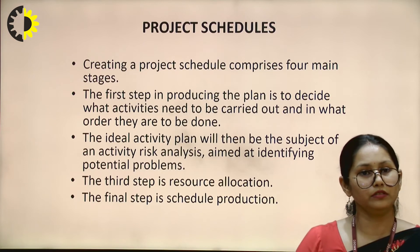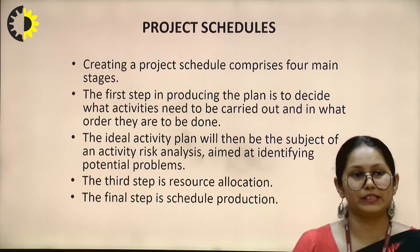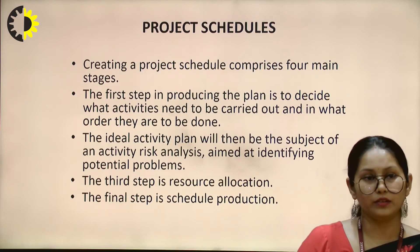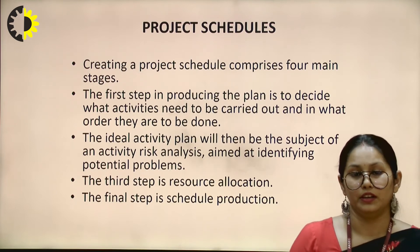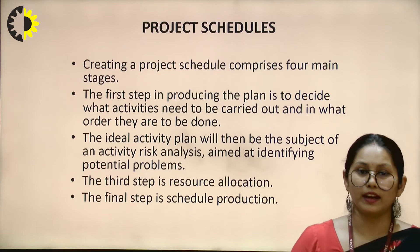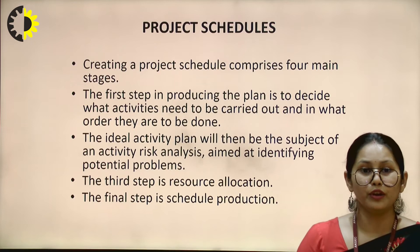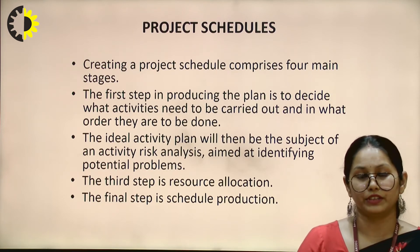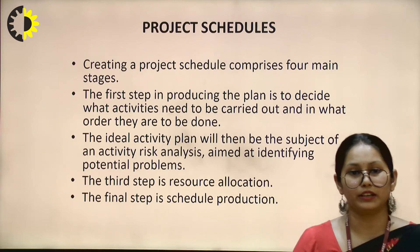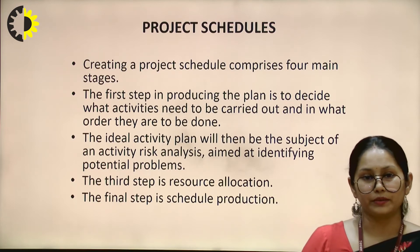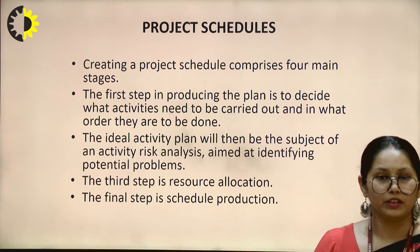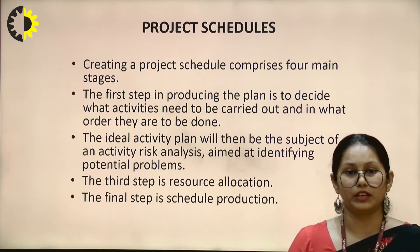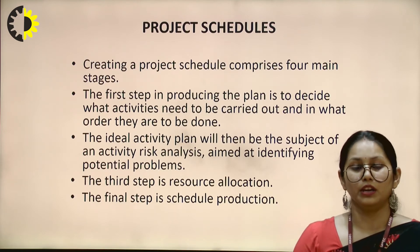A project schedule comprises four main steps. The first step is producing the plan — deciding what activities need to be carried out and in what order. We identify the activities that need to be done and in what sequence they will be completed. Activities such as risk analysis are potential activities that need to be identified at an early stage, so we find out which activities could create problems during implementation.